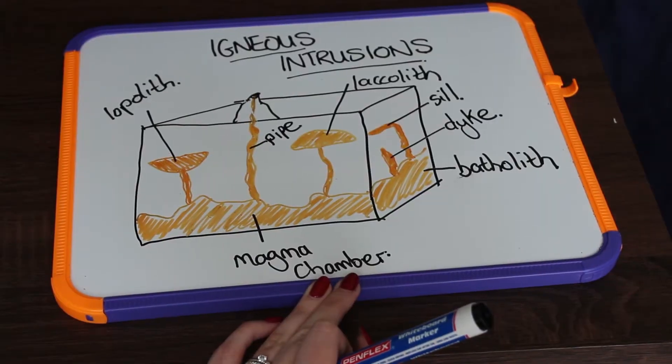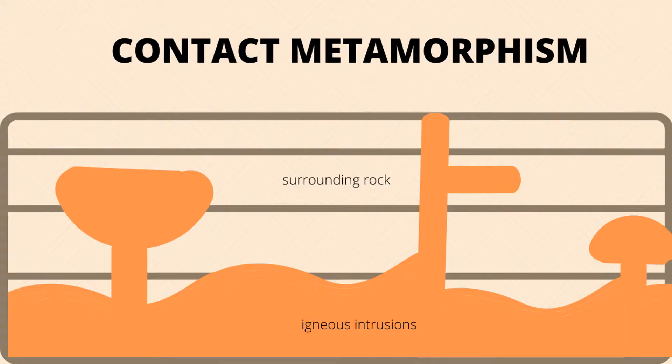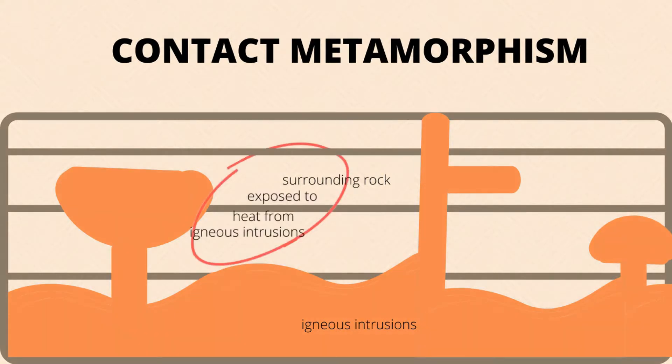Think back to when we spoke about our igneous intrusions in our igneous rocks video. If our surrounding rock, which is most likely sedimentary rock, is right next to one of those igneous intrusions, this rock is going to be exposed to intense heat. Magma is very, very hot.